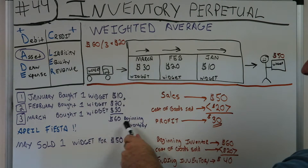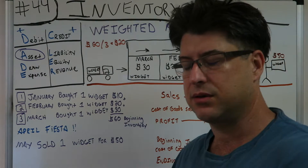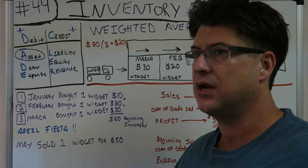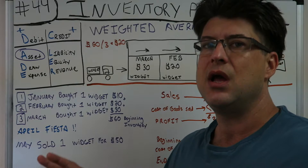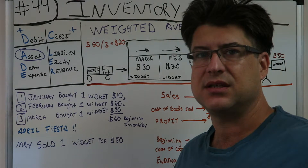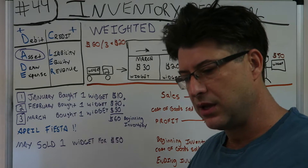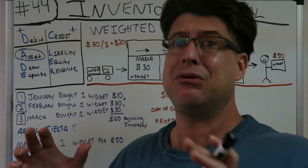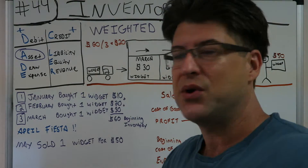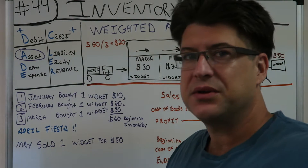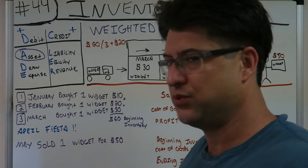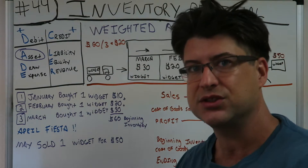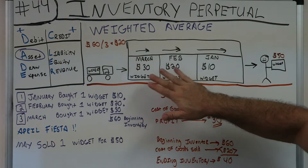What you gotta do sometimes is just slow down. I saw a comment like this and it happened to me as well — I tend to overcomplicate things. Just slow down and try to figure it out. Like if I say, what's our beginning inventory? And you go, I don't know. And I'm like, yes you do — just slow down. You know inventory is an asset, you know it's something we've got for resale, you know we've got three different widgets here — one for $30, one for $20, one for $10. You know your beginning inventory is all three of these added up, so it's $60.